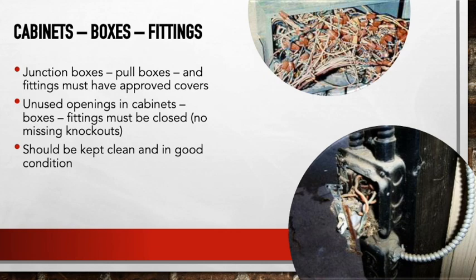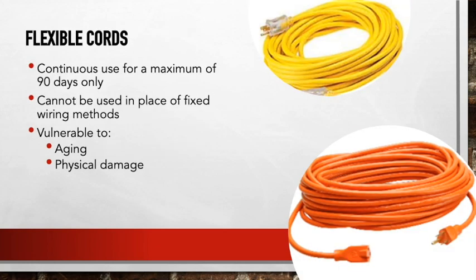Cabinets, boxes, and fittings: junction boxes are where multiple electrical wires come together and are connected or terminated. Unused openings in cabinets need to be covered — they have knockouts, those quarter-sized things, which should be kept in good condition. Covers should be in place so dust, birds, spiders, and mice can't get in. As we've probably all seen, animals will make their home in there if given any chance because it's warm and cozy.